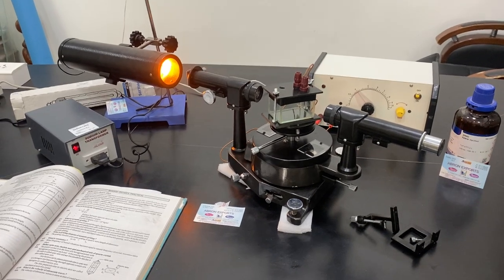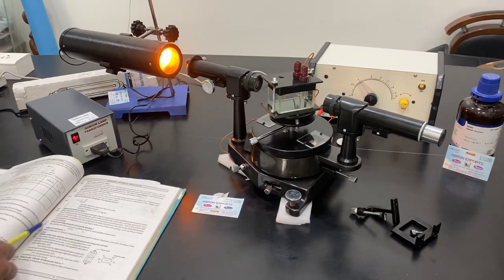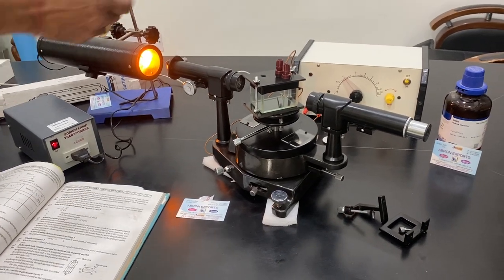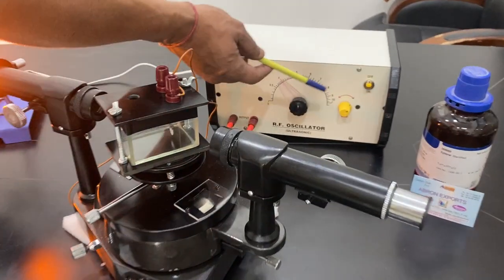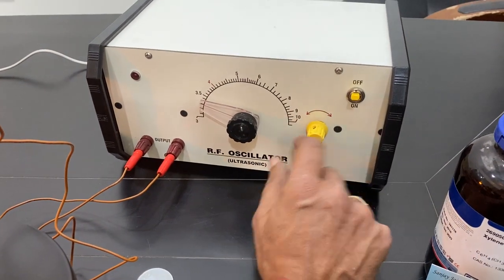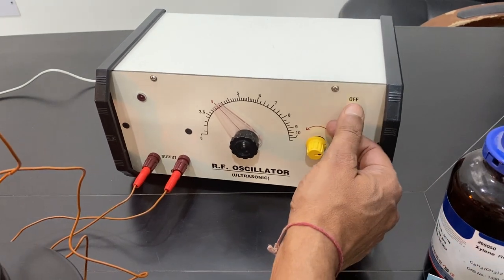Welcome to a video by Abron. This is an experimental setup for ultrasonic diffraction apparatus using the RF oscillator, which is here. We can change the oscillation from 3 megahertz to 10 megahertz. It is analog; we have the digital model also.